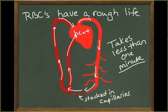Red blood cells undergo major mechanical stresses. The red blood cell travels from the heart through the peripheral tissues and back to the heart in less than a minute. In that time, the red blood cell is forcefully pushed out of the heart and forced through blood vessels, where it bumps into other cells and the walls of blood vessels. It stacks up with other red blood cells to fit into the narrow lumen of the capillaries.